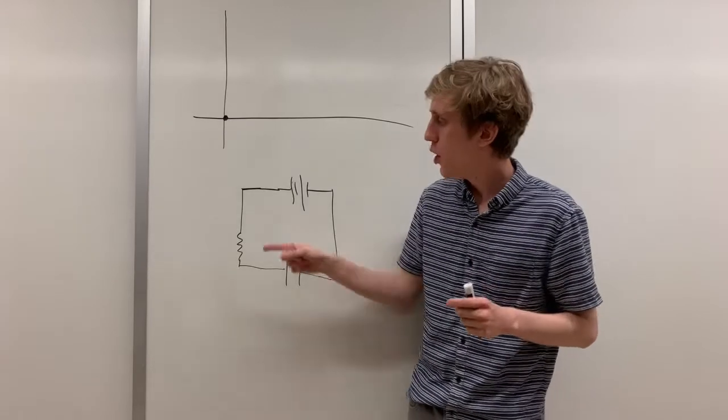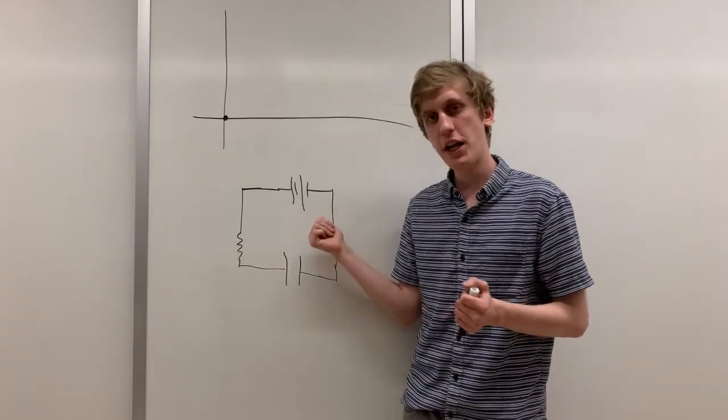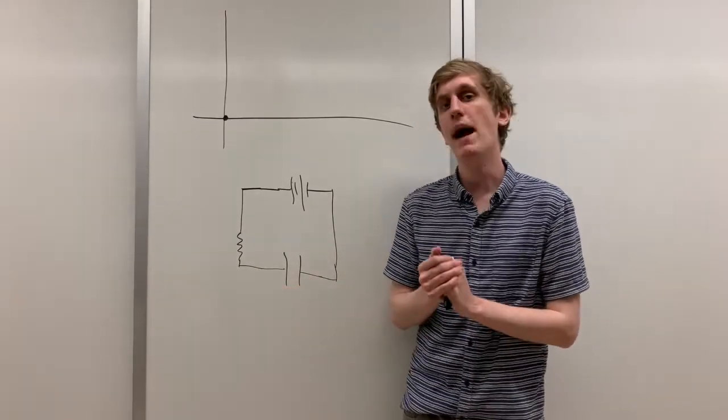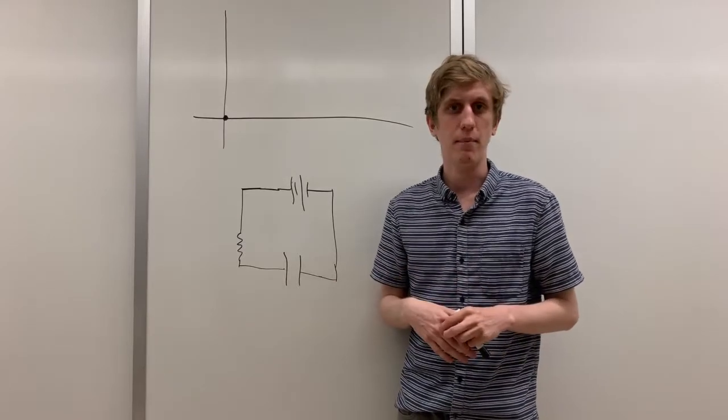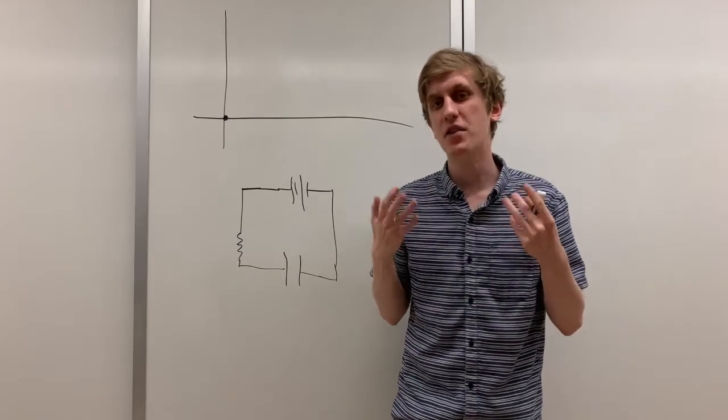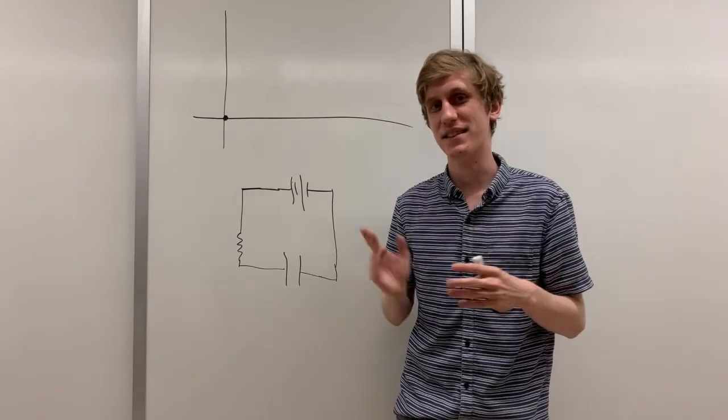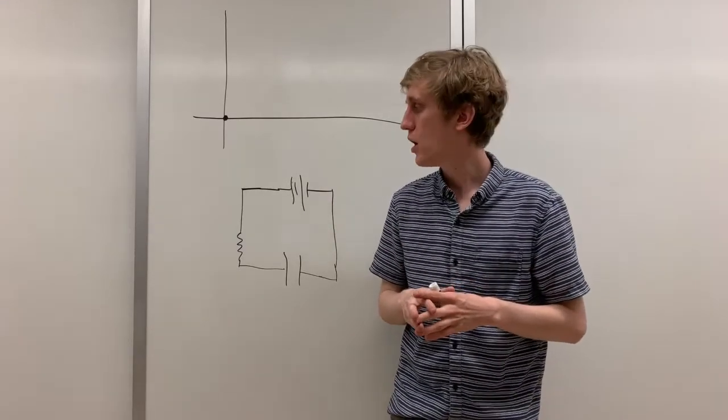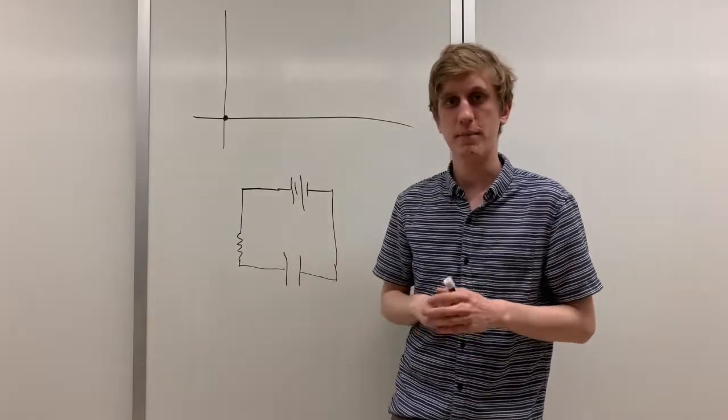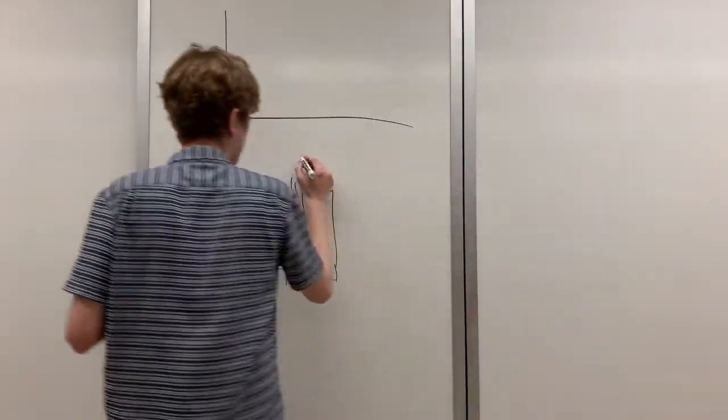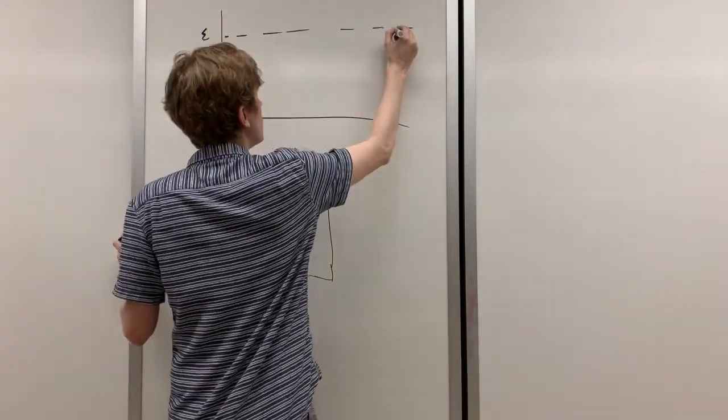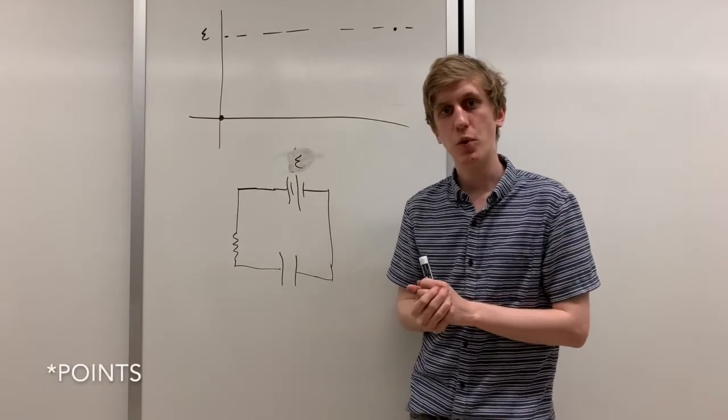If we use the loop rule, then we can ignore this resistor. If the change in voltage across this battery is some number, then we know that the change in voltage across this capacitor will just have to be negative that number. However, I'm going to graph the voltage across this capacitor as positive, because we're thinking about the capacitor as charging up. So I think this is a little bit more intuitive. So we know that the final voltage across the capacitor will just be the voltage across the battery. Let's call that E.